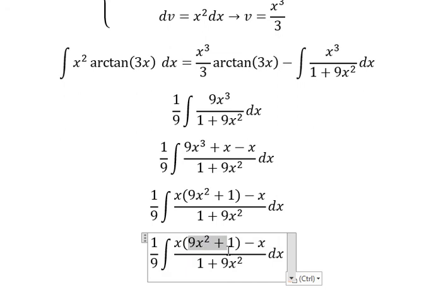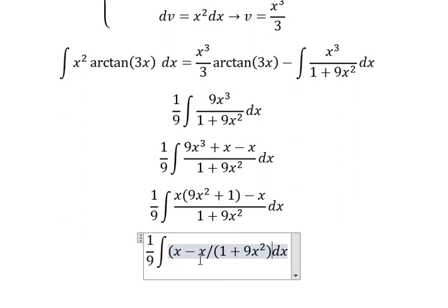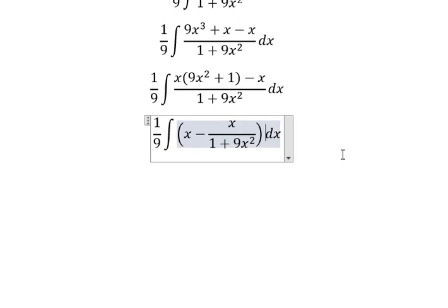So this one divide by this one you got about 1, and that's why you have x minus x over 1 plus 9x² dx. Now we have the final answer.